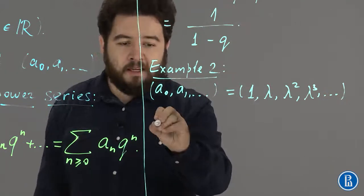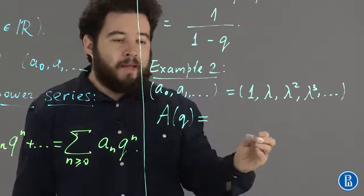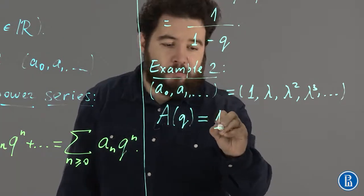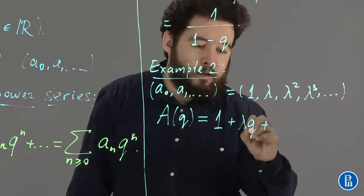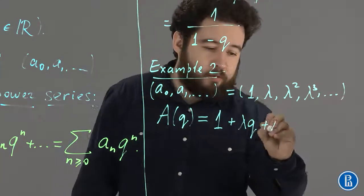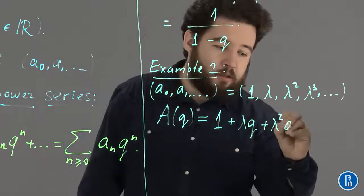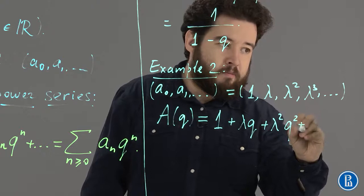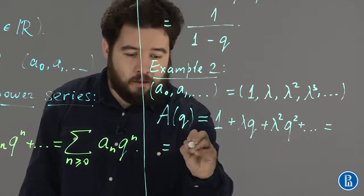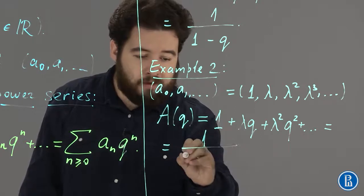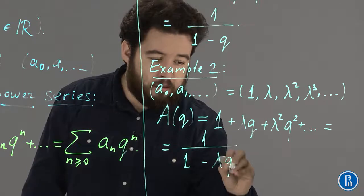In this case, our A of Q will be a geometric progression, again, that the common ratio will be equal to lambda times Q. So, this will be 1 plus lambda*Q plus lambda squared times Q squared plus and so on and so on, and this will be just 1 divided by 1 minus lambda*Q.